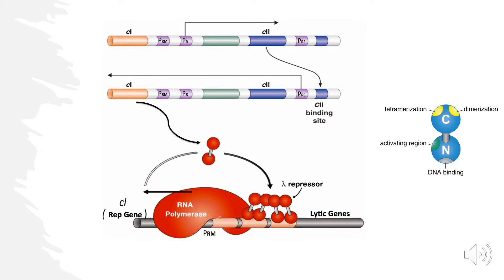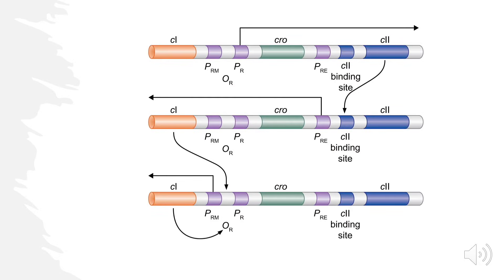One distinction to note: CI tetramerizes, while Cro only dimerizes — it stays as a dimer. CI looks almost like a dumbbell while Cro is just a small dimer. Now we also see some new elements at the top of this image: CII and PRE, along with a CII binding site. This looks confusing but we'll get into it.